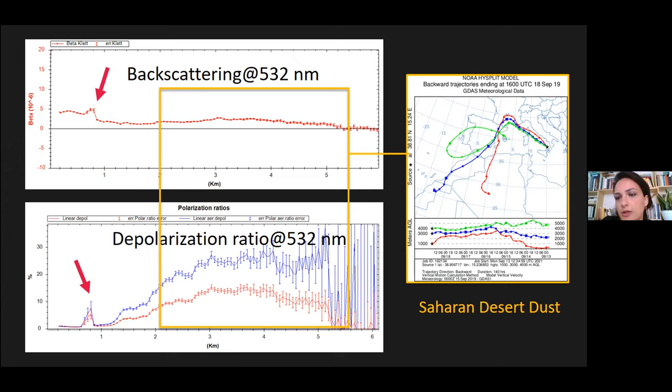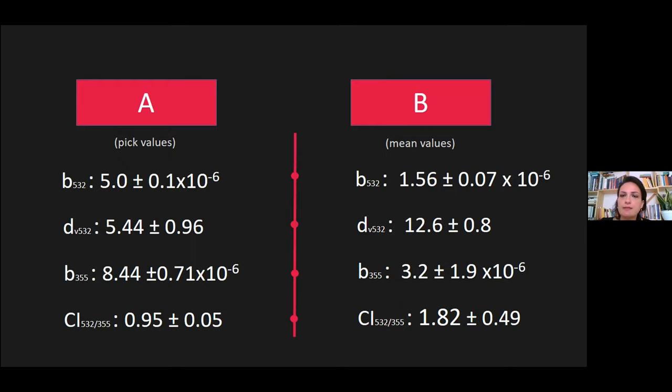During the travel, there is a mix with the other trajectory. We retrieve the main information for layers B and A. As regards layer B, these are mean values, and they are in good agreement with the hypothesis of Saharan desert dust. But as regards event A, these are peak values, and we are in some trouble because the color index is quite low — so we are in the presence of big particles — but the depolarization is very low.